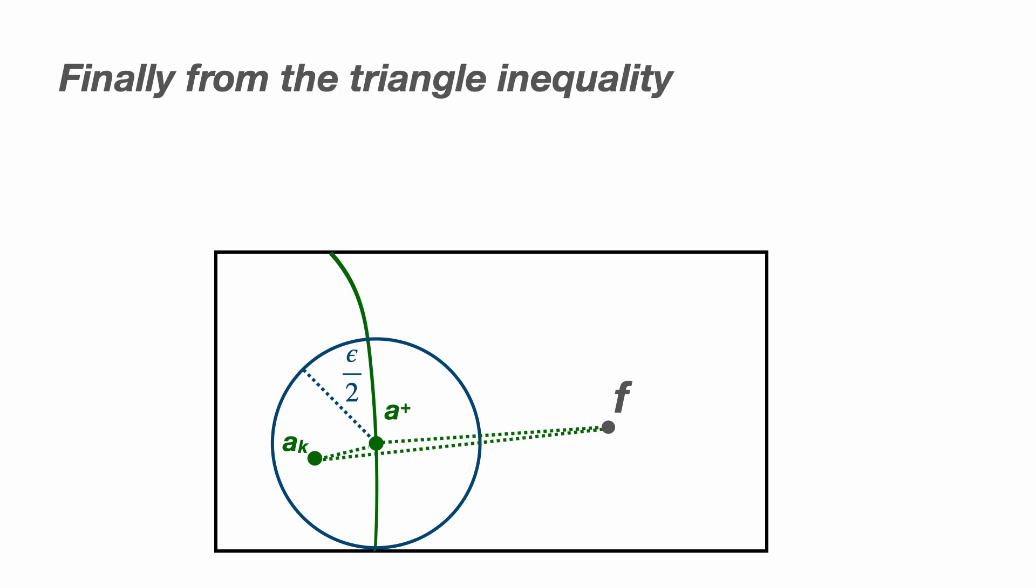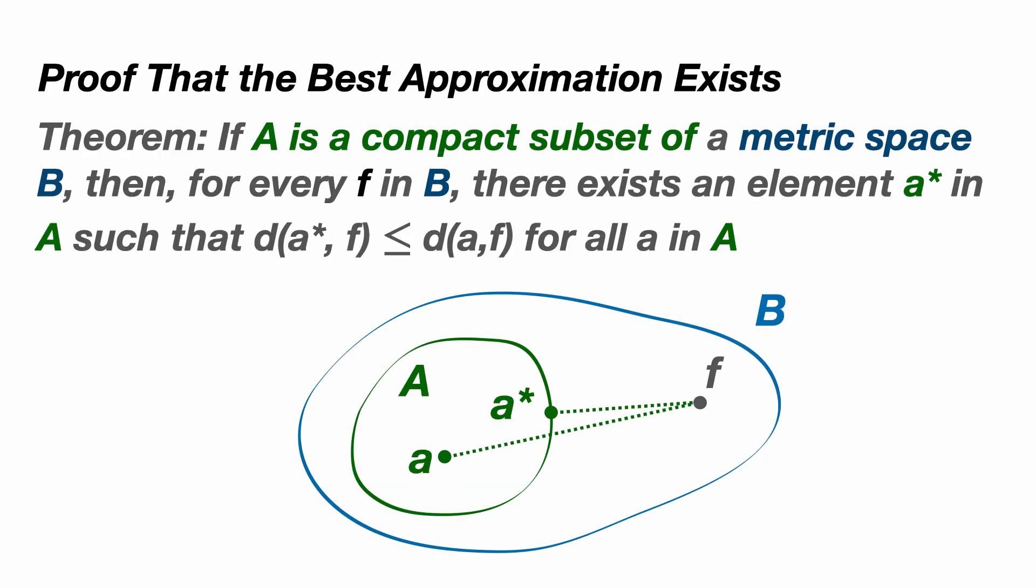From the triangle inequality, we have the distance between A plus and f is less than or equal to the distance between A plus and a sub k, plus the distance between A sub k and f. Now we already have inequalities for both of these distances on the right hand side, and adding these together shows that the distance between A plus and f is bounded by d star plus epsilon. Since epsilon can be made as small as we choose, then the distance between A plus and f is d star, and so A plus is the best approximation.